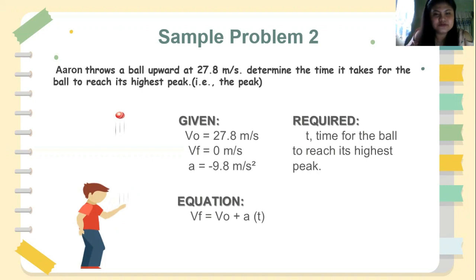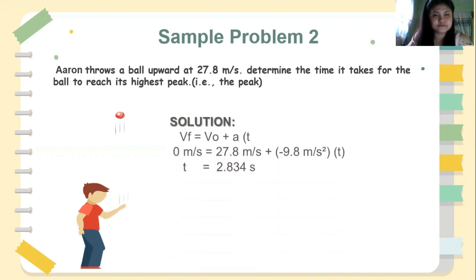Now we will solve for the unknown value using the substitution method by substituting the known values in the equation. The final answer is, the time it takes for the ball to reach its highest peak is 2.834 seconds.